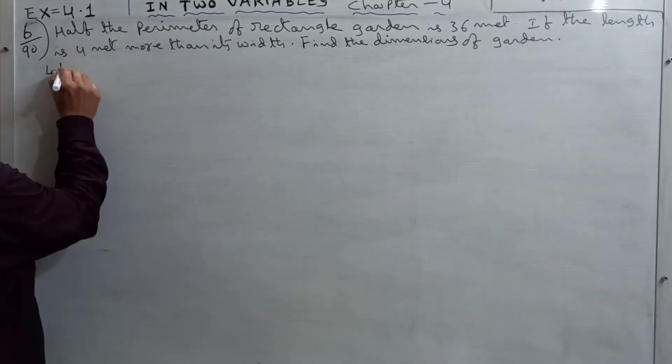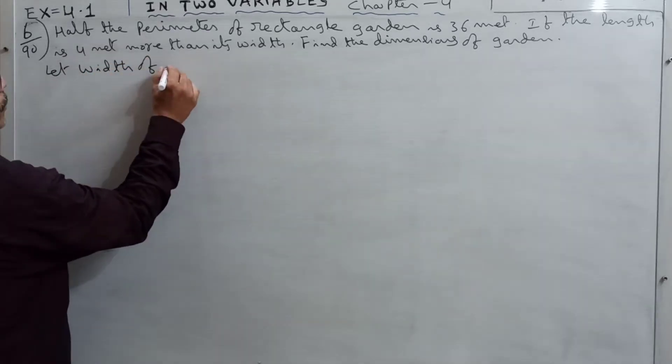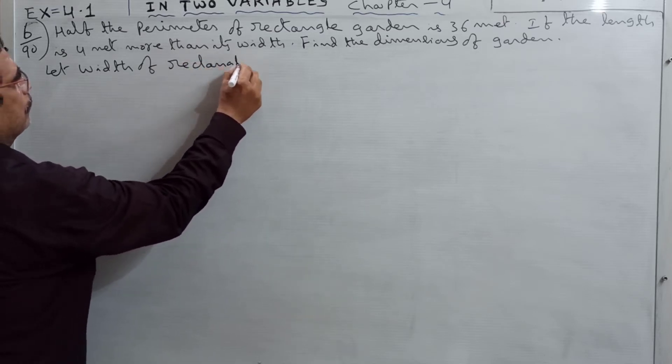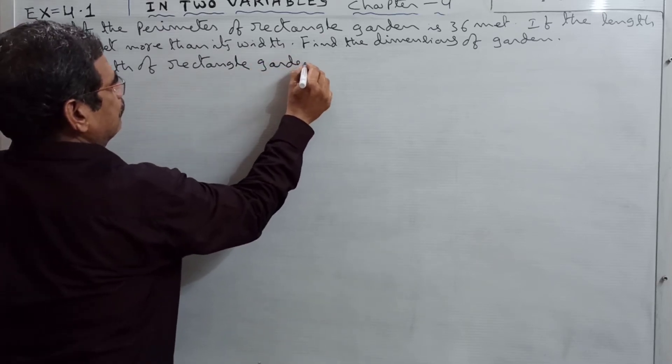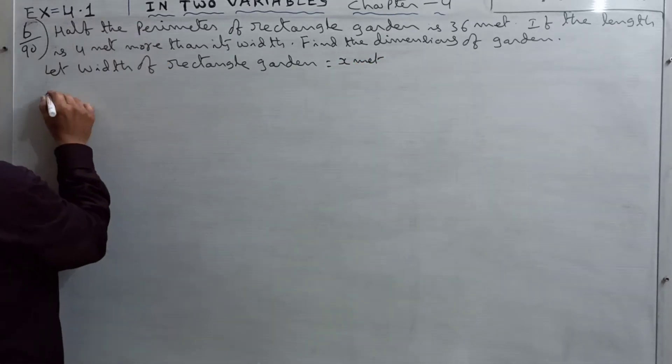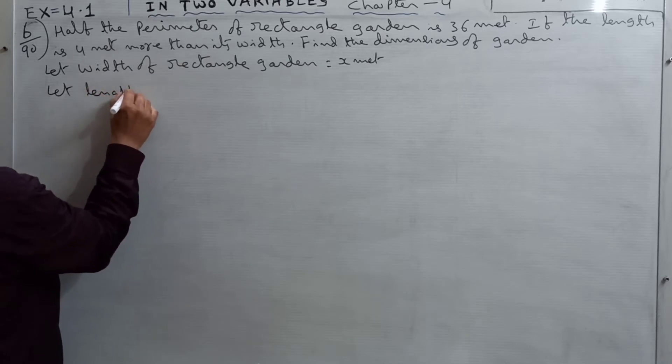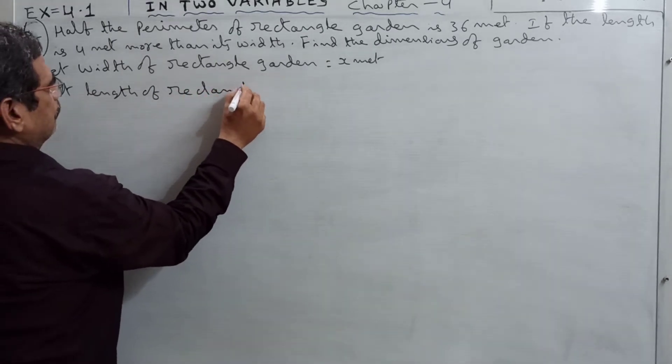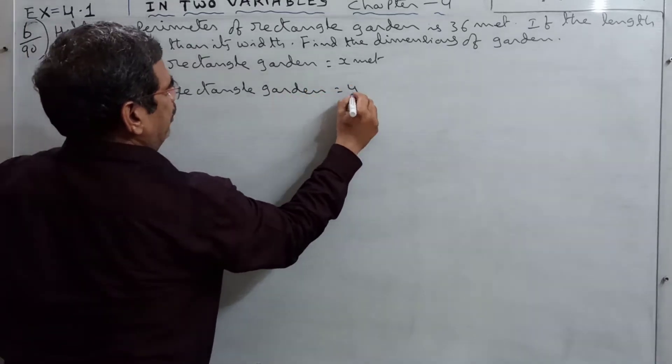Let width of rectangular garden be equal to x meters. Let length of rectangular garden be equal to y meters.